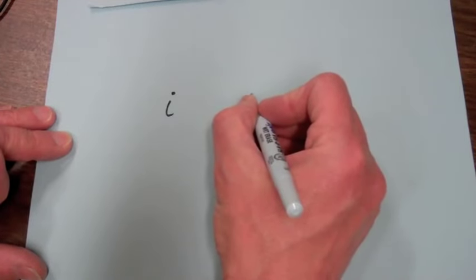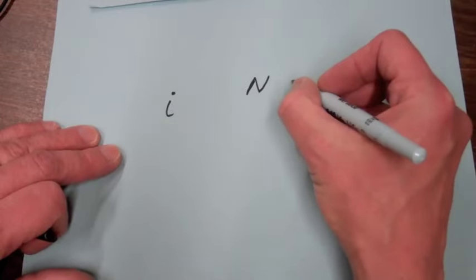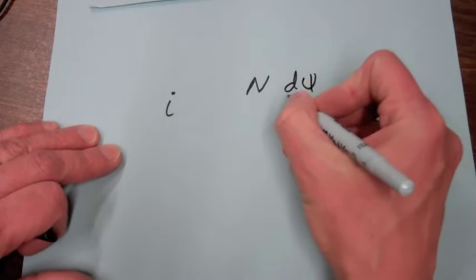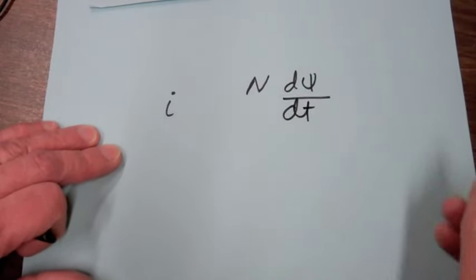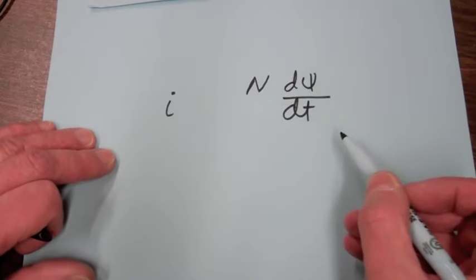So the current is proportional to the number of turns, which we will use N to represent. We also saw that the current increased as the rate of change of magnetic flux inside the coil increased. So dΦ/dt represents the change in the magnetic flux inside the coil.